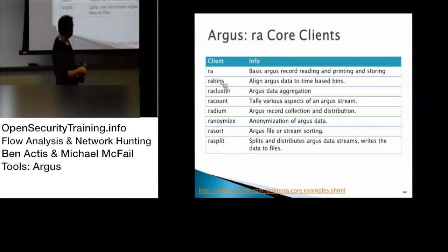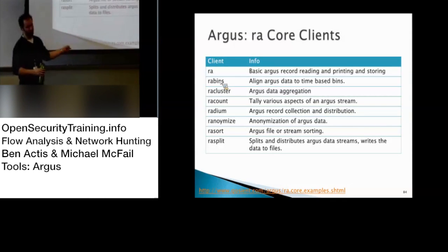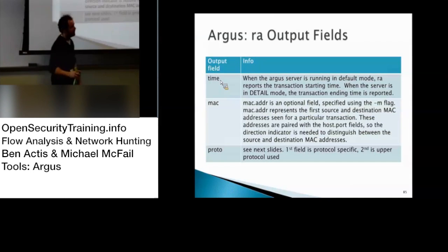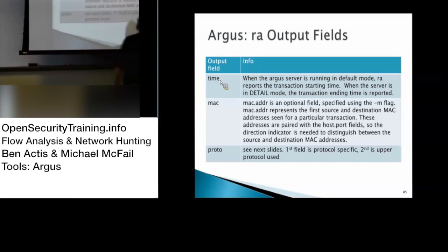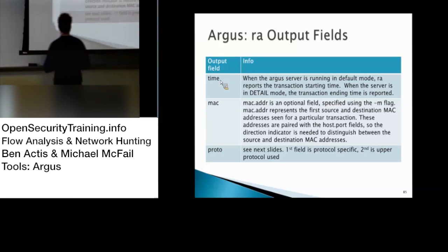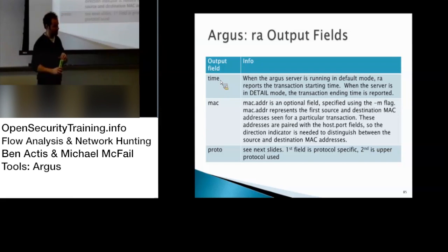On their website there are examples if you want more information. So, what does the output look like? Very similar — you have a time field, and you have a MAC address field. This is straight from the man page and source code if you have any questions. MAC address is an optional field, not default. Like the VLAN information, that's at the layer 2 level.